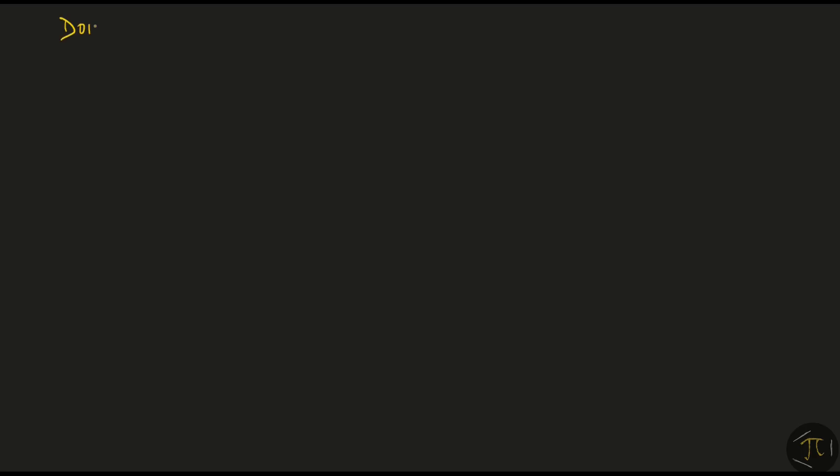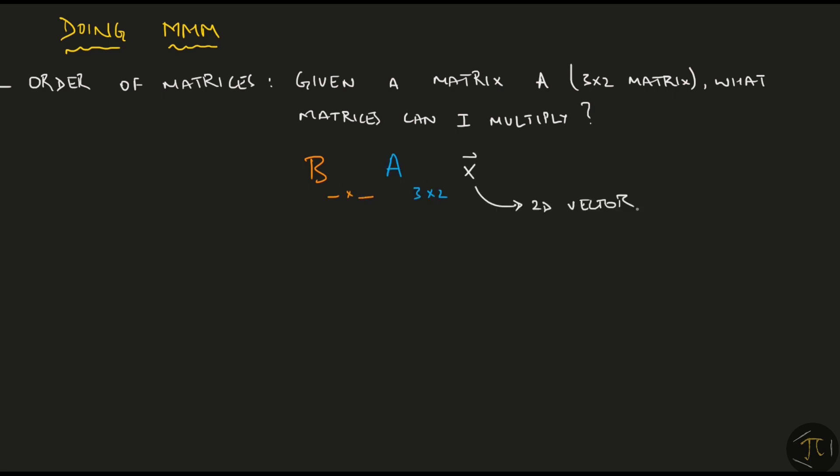Now let's talk about the order of matrices in MMM. Let me ask you this, for a given matrix A, a 3x2 matrix, what matrices can I pre-multiply to this? I need to find the order of this matrix B here. Now Ax would represent a 3x1 vector, and if I have to multiply a matrix with a 3D vector, that matrix must have 3 columns. The number of rows can be anything, say p for this example.